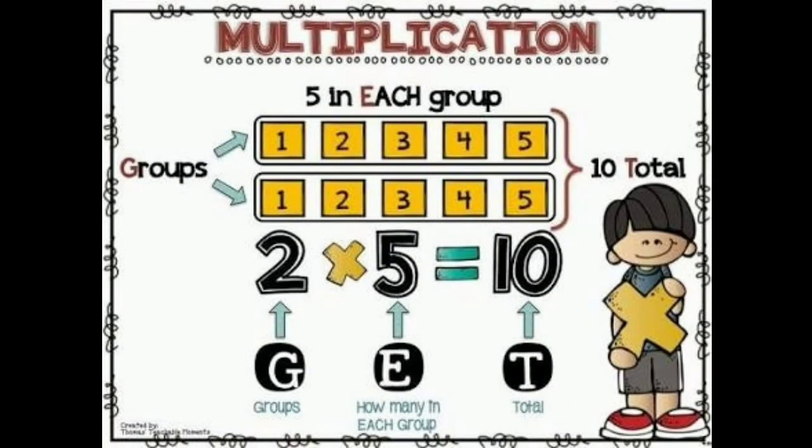Cross is the sign of multiplication. Remember that the first digit shows groups, and the second number shows how many objects are in each group. For example, first digit 2 shows that 2 groups are here, and the second digit shows how many squares are in each group. There are 5 squares. 2 multiply 5 is equal to 10, so 10 squares are there.